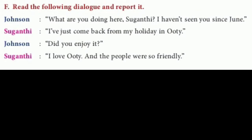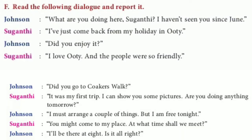Section F: Read the following dialogue and report it. Johnson and Suganti are talking. Johnson says: 'What are you doing here, Suganti? I haven't seen you since June.' Suganti says: 'I have just come back from my holiday in Ooty.' Johnson says: 'Did you enjoy it?' Suganti: 'I love Ooty and the people were so friendly.' Johnson asks: 'Did you go to Cocos Walk?' Suganti: 'It was my first trip. I can show you some pictures. Are you doing anything tomorrow?' Johnson: 'I must arrange a couple of things. But I am free tonight.' Suganti: 'You might come to my place. At what time shall we meet?' Johnson: 'I will be there at 8. Is it alright?'